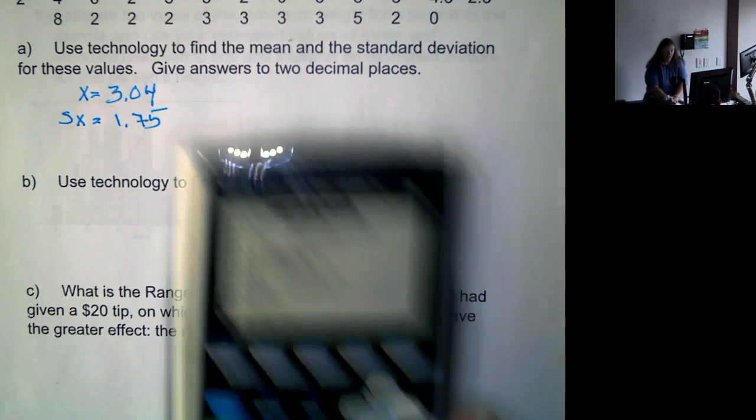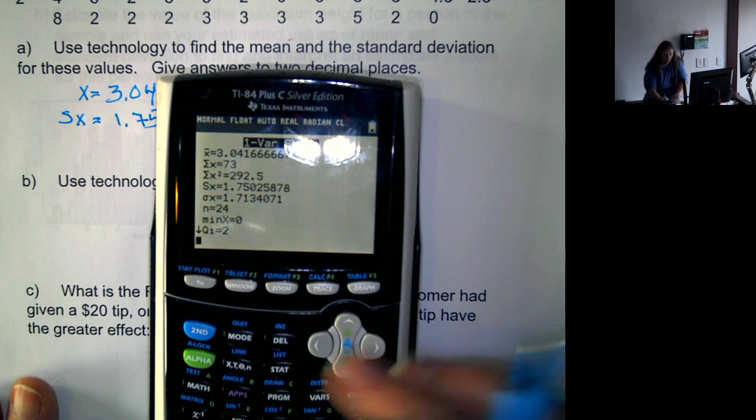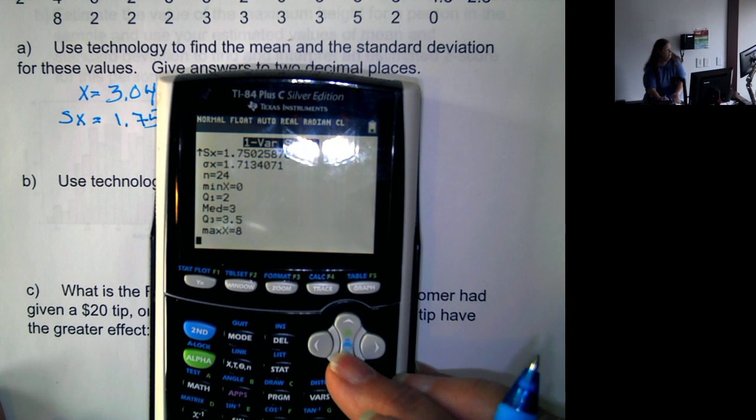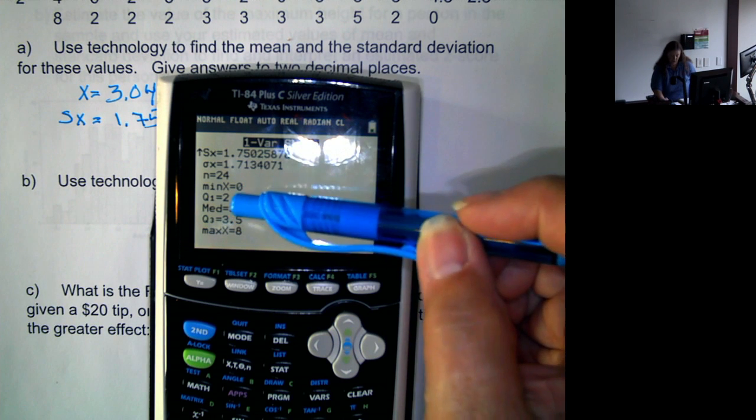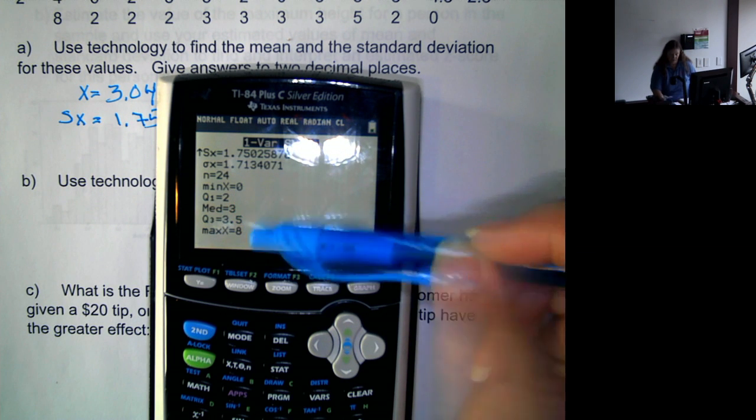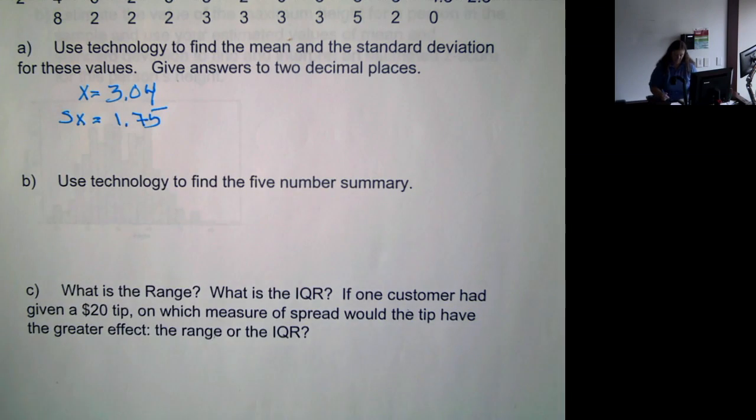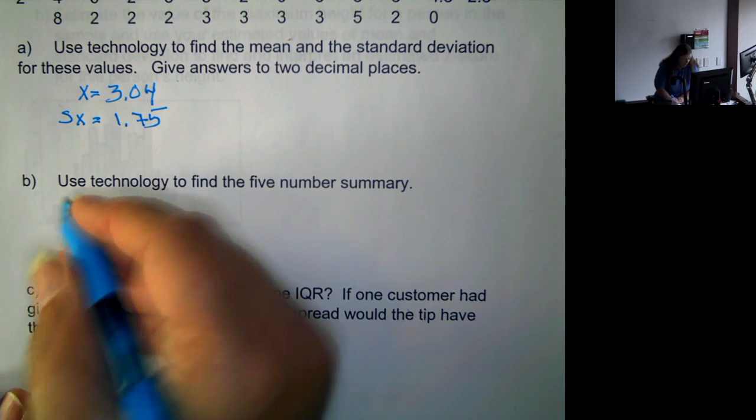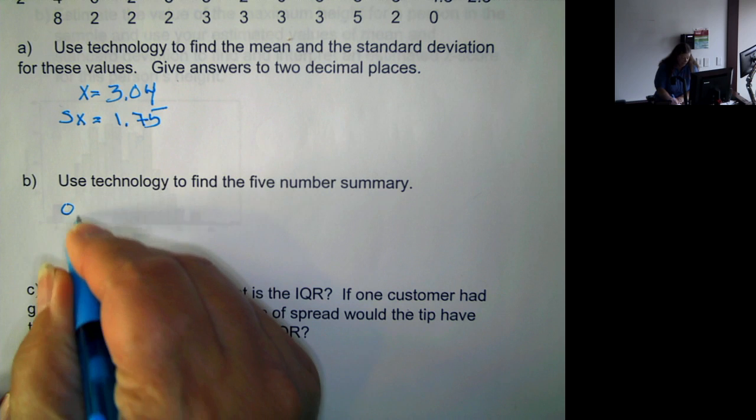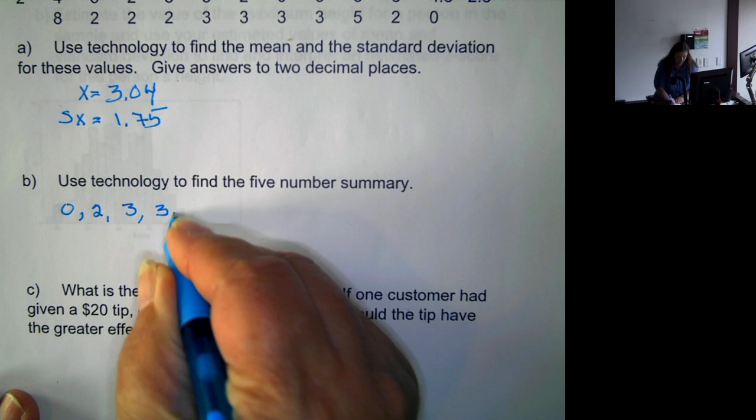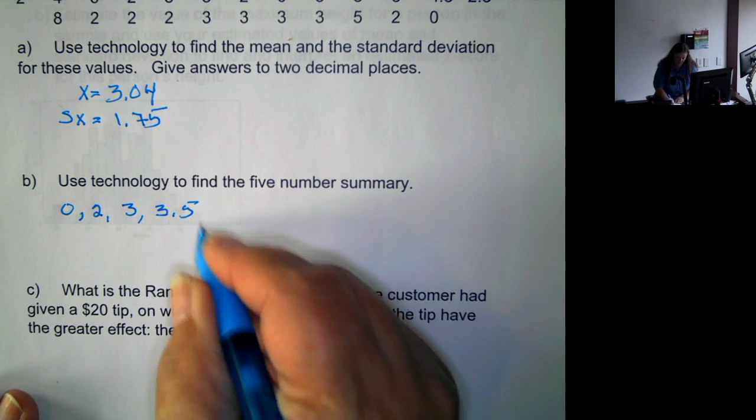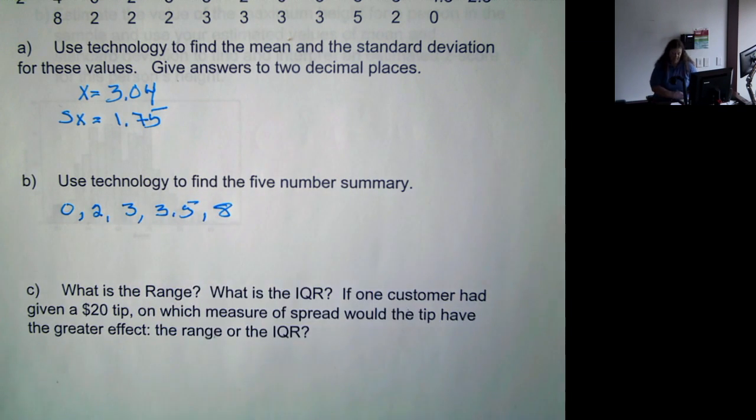Now it asks for the five-number summary. Well, if we scroll down, we get the five-number summary. Remember, it's the minimum, Q1, median, Q3, and maximum. So our five-number summary is 0, 2, 3, 3.5, and 8.